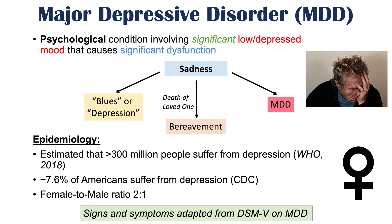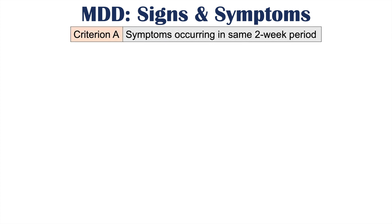The topic of this lesson is the signs and symptoms of major depressive disorder. The following signs and symptoms are adapted from the DSM-5 criteria, which is the Diagnostic and Statistical Manual of Mental Disorders — what is used to officially diagnose this condition. The signs and symptoms are categorized by particular criteria. The first is Criterion A, and all of these signs and symptoms occur in the same two-week period.